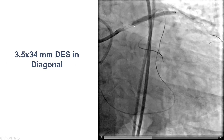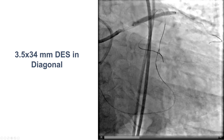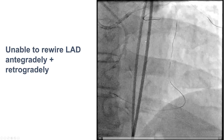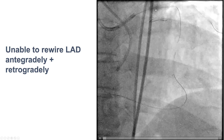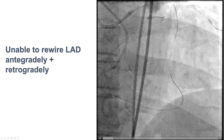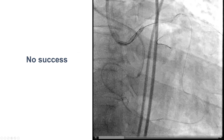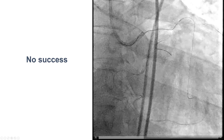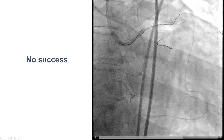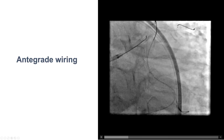We then placed the main vessel stent — a 3.5 by 34 mm stent — all the way from the left main into the diagonal branch, with proximal optimization technique using a 3.5 mm balloon. Then we had the same problem: we could not advance an antegrade wire into the LAD to perform the second kissing balloon inflation. We tried with a retrograde microcatheter, a retrograde wire, and an antegrade wire, but once again had significant difficulty. It was unclear whether the wire was going around or under the struts of the LAD stent.